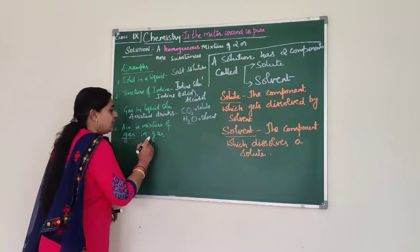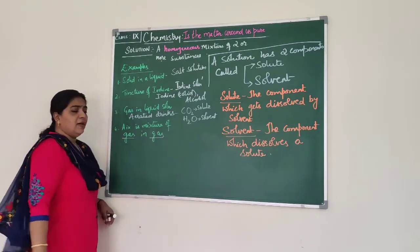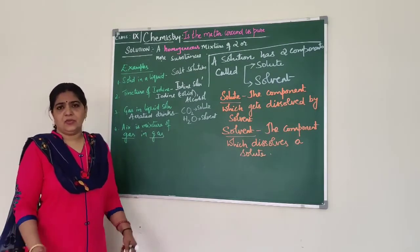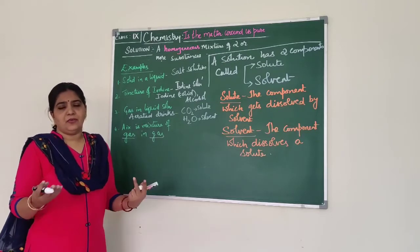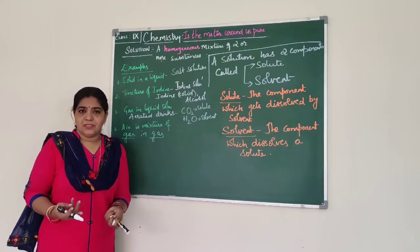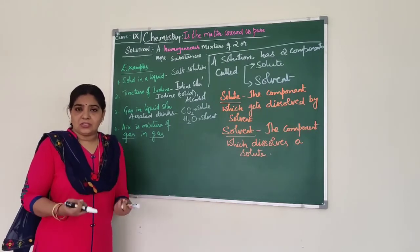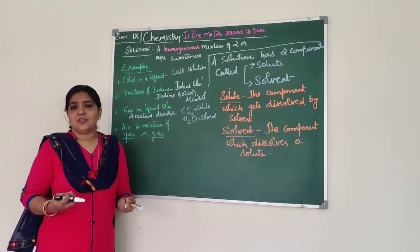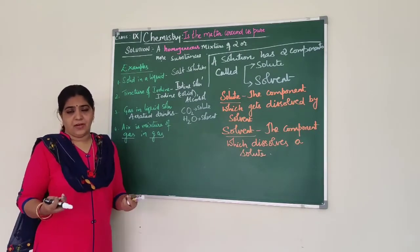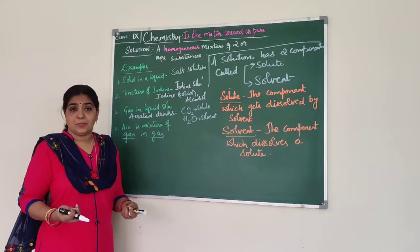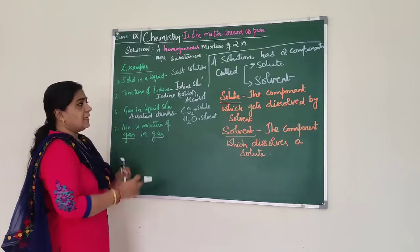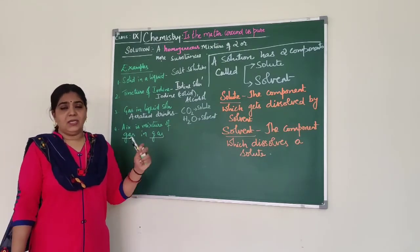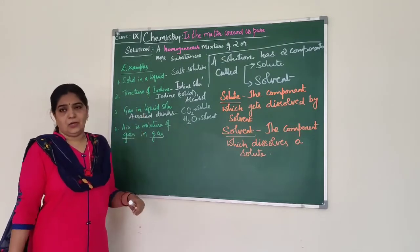Air is a mixture of gas in gas — a gas dissolved in gas. As you know, nitrogen is 78% of air, oxygen is about 21%, and carbon dioxide is 0.03%. These are examples of a homogeneous mixture, that is, a gaseous solution.